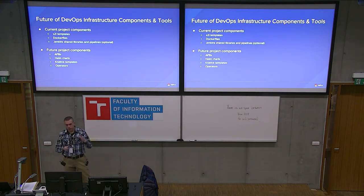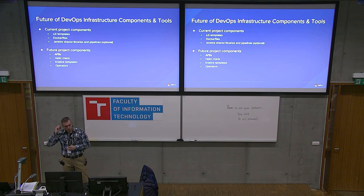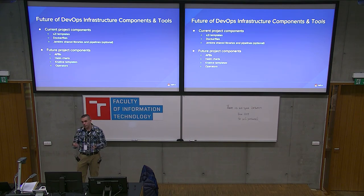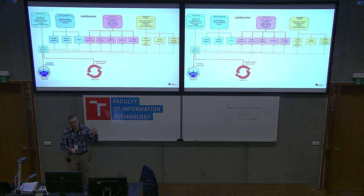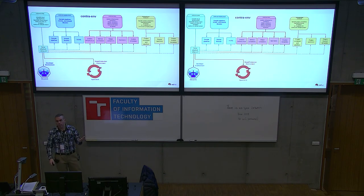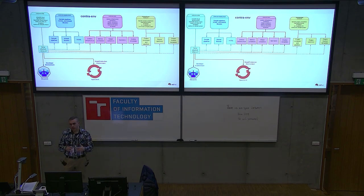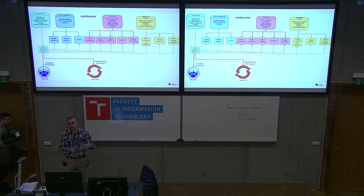Rounding out the future: today we have S2I templates, Docker files, and Jenkins shared libraries. Looking forward, the infrastructure setup could also include APBs, Helm charts, Knative templates, or operators — both for the infrastructure itself and for your project. The idea is to keep this platform flexible: you can keep adding into it, deploy your own pieces, and all you really need is the OpenShift platform with some Ansible post-hooks to do any extra work after deployment.